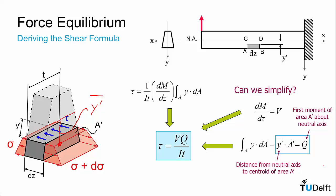If we take these simplifications and combine them, we get the result that the shear stress tau is equal to VQ over It.